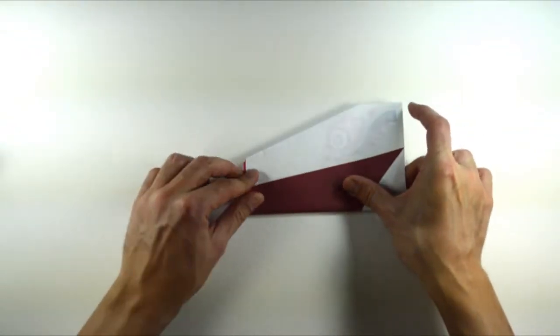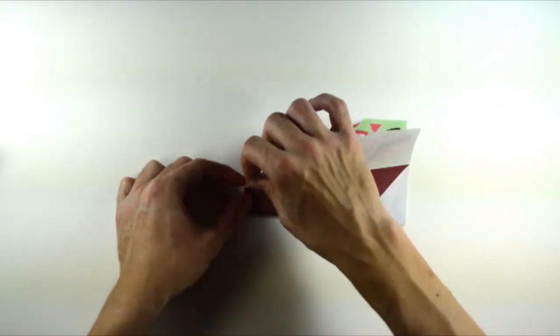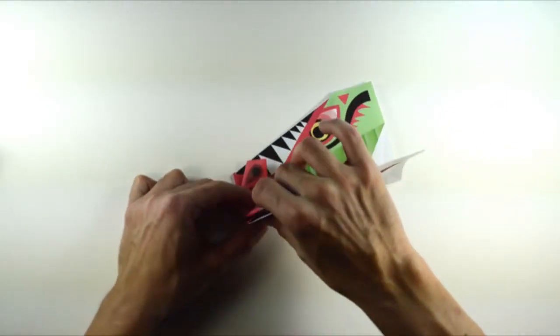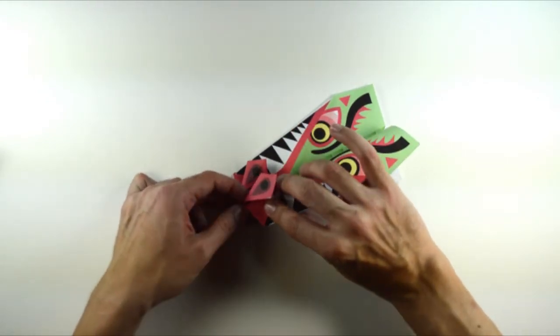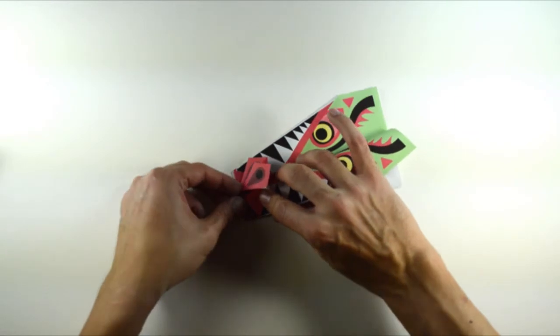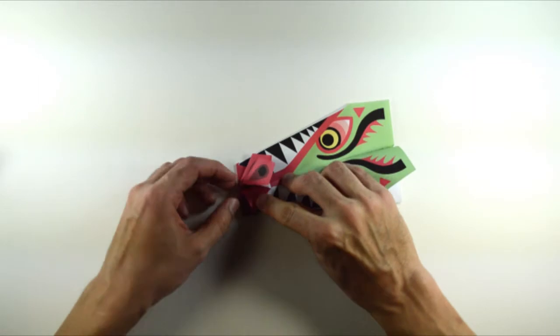Finally, fold the entire head in half. Fold down so that the top edges of the wings would fall along the bottom edge of the fuselage.